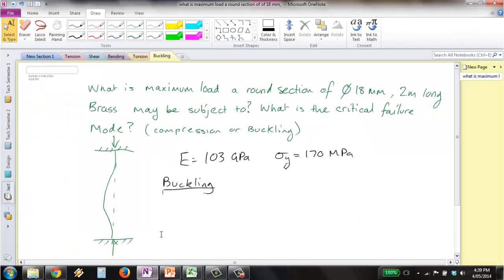That means for a 2m long column we get LE equal to 0.5 times L, which is equal to 1m.